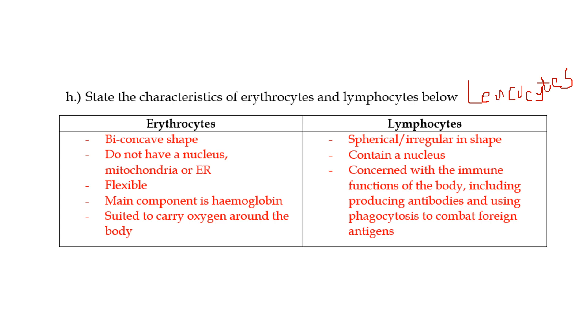Erythrocytes are biconcave in shape. They don't have a nucleus. They don't have mitochondria or an ER, an endoplasmic reticulum. They're flexible. Their main component is hemoglobin, and that's what makes them suited to carry oxygen around the body.